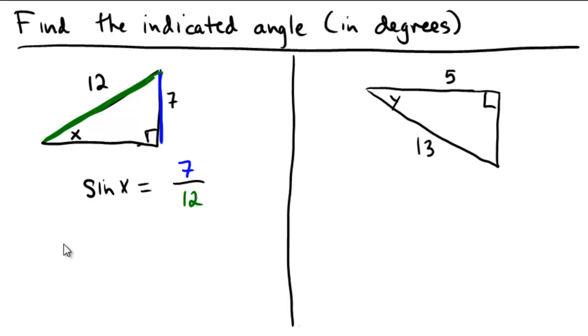That would mean that x would be equal to the inverse sine of 7 over 12. So on most calculators, this is going to be the second option on your sine. In your calculator, second option on the sine of the number 7 over 12, and rounding this to one decimal place, we would get 35.68, so that would be 35.7 degrees. The measure of that angle is approximately 35.7 degrees.